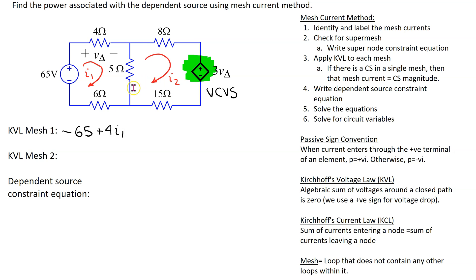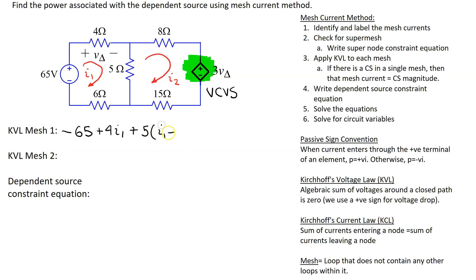Moving on to the 5-ohm resistor, this resistor has two mesh currents flowing in opposite directions. Because we are applying KVL to mesh 1, we give priority to the direction of i1, which gives plus 5*(i1 minus i2). The last component is the 6-ohm resistor with only i1 flowing through it, giving 6*i1 equals 0.